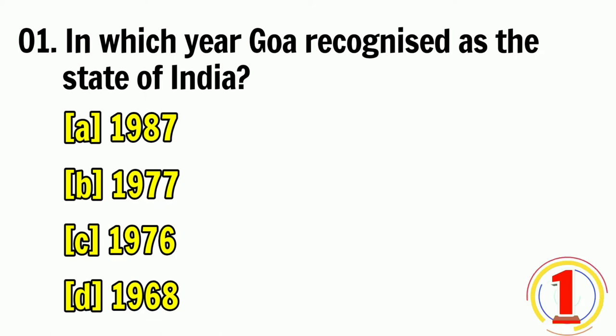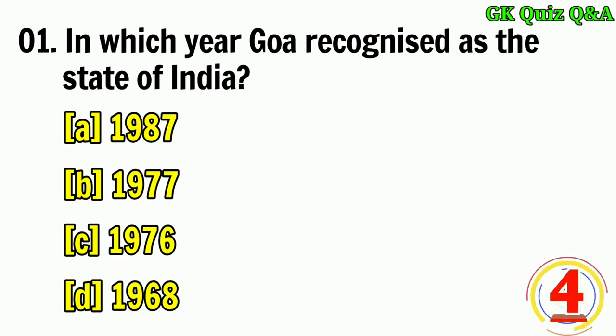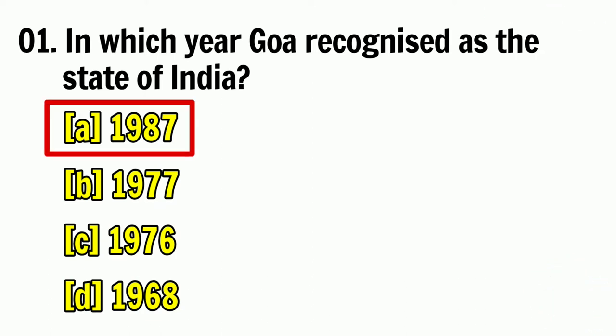In which year was Goa recognized as a state of India? Answer A: 1987.